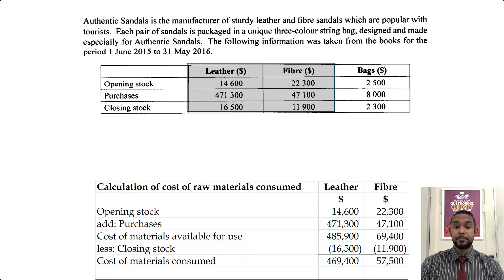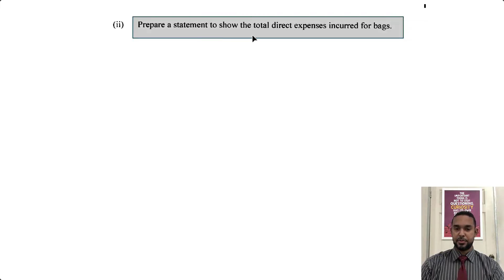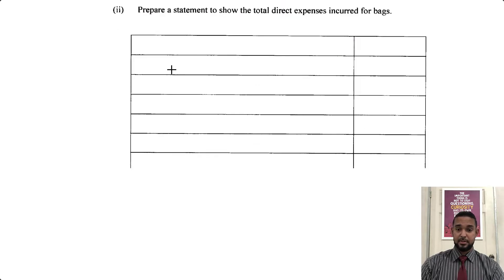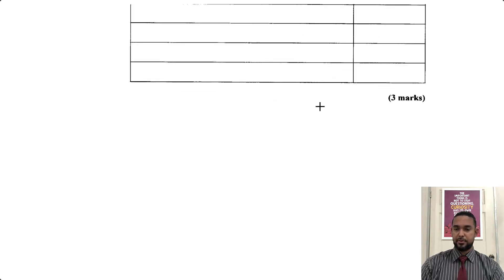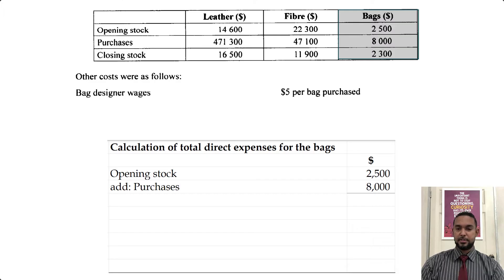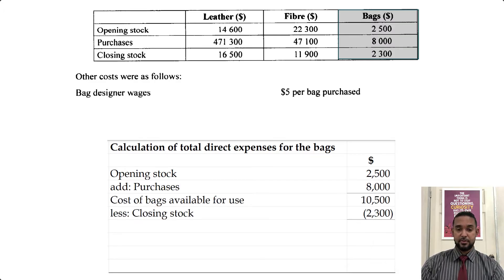Let's scroll down to the next part of the question. This asks us to prepare a statement to show the total direct expenses incurred for the bags, worth about three marks — not too involved. So we have the information for bags: cost of bags with opening stock plus purchases, that's the cost of bags available for use, minus the closing stock of $2,300, giving us $8,200.